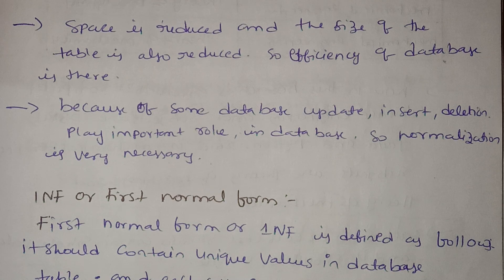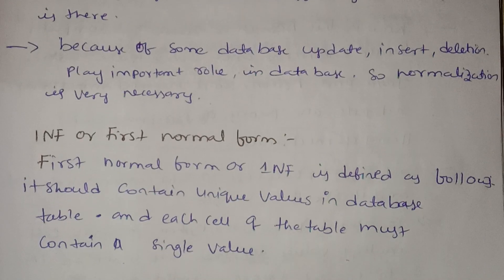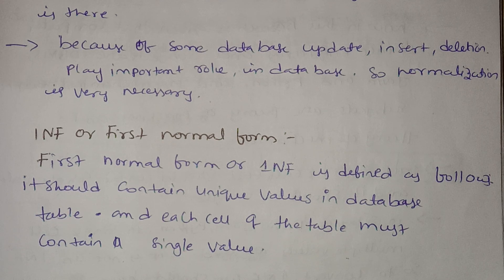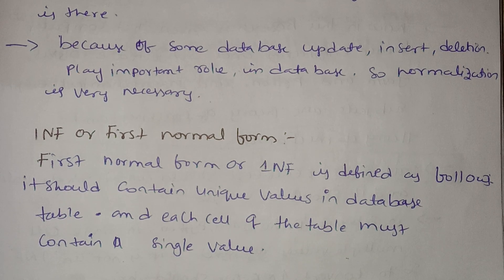Normalization is also very important. The third normal form extension is called BCNF — BCNF is called 3.5NF. We will cover this in the next class.